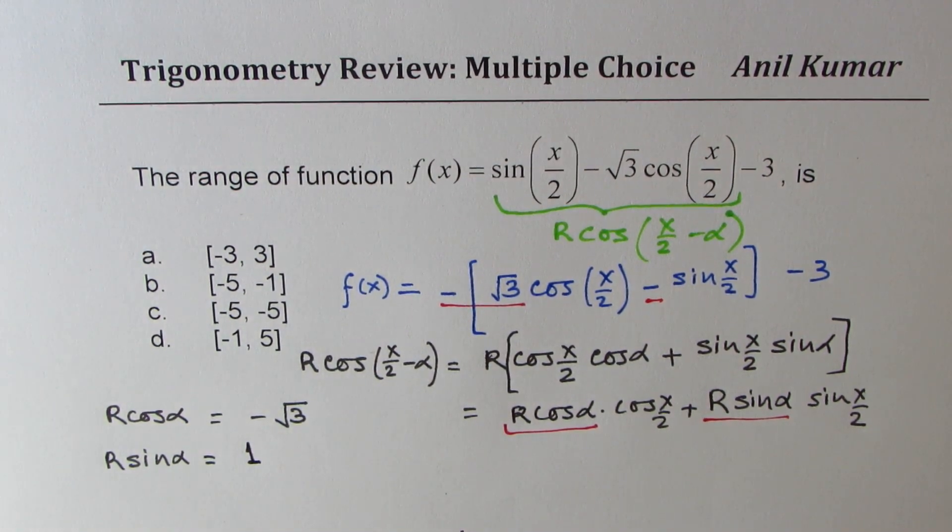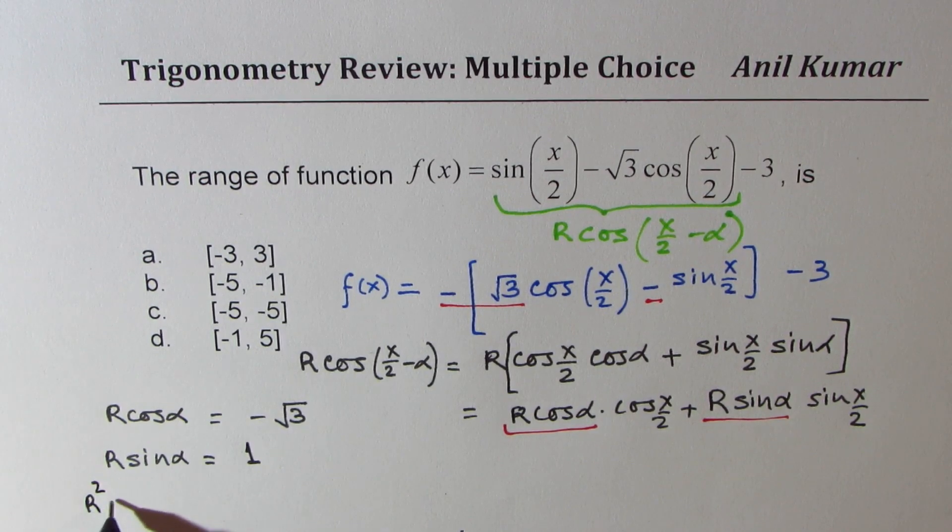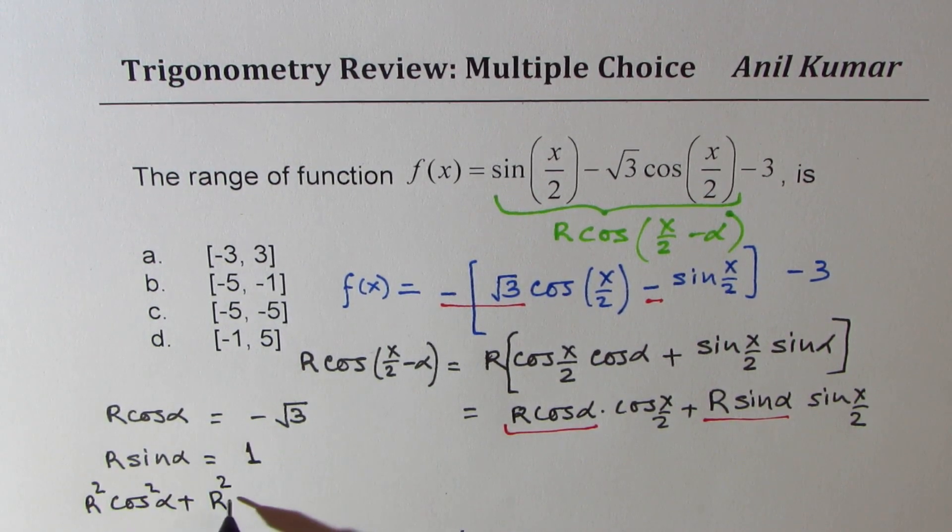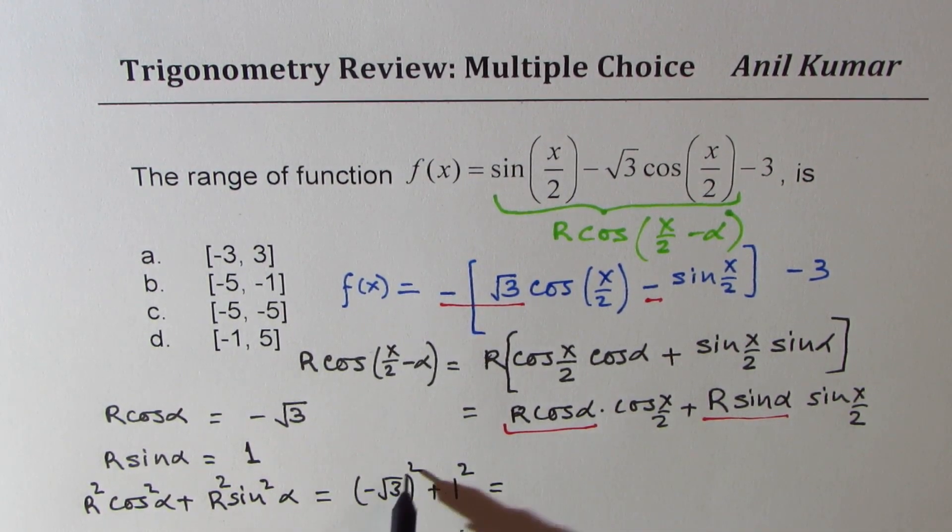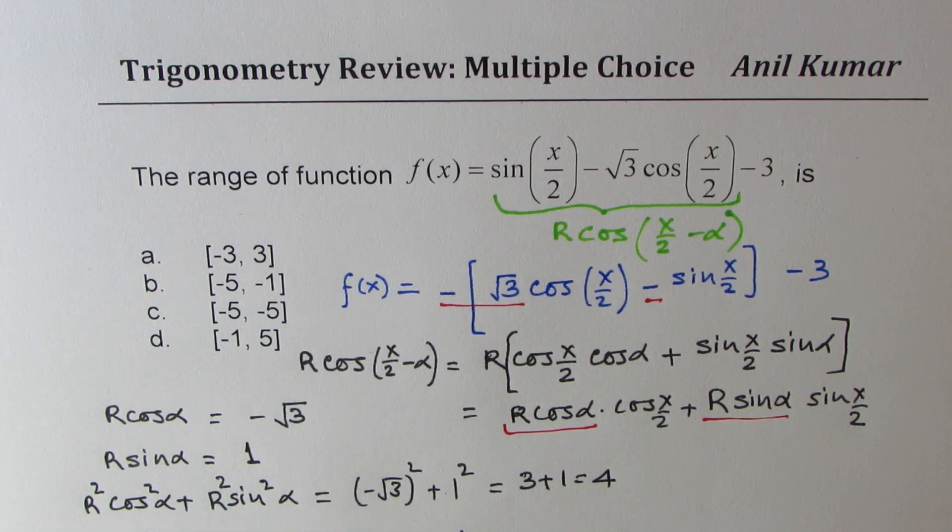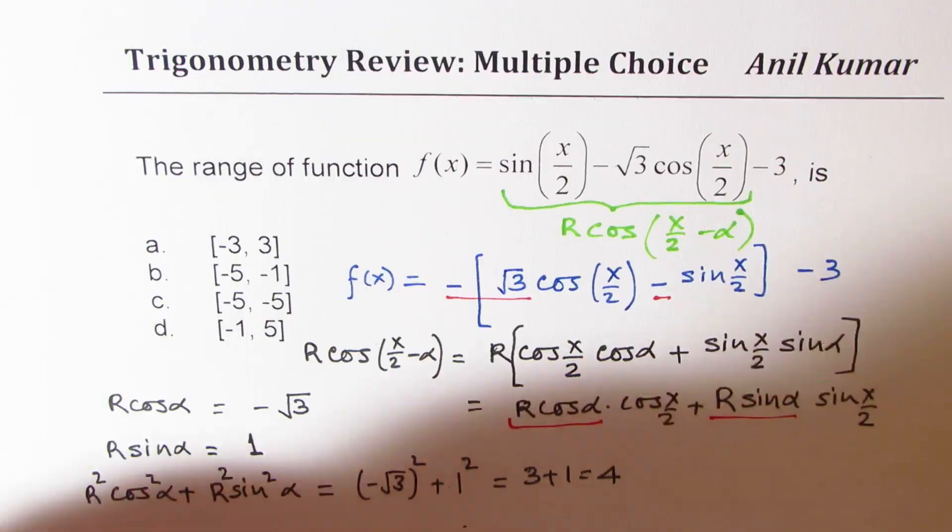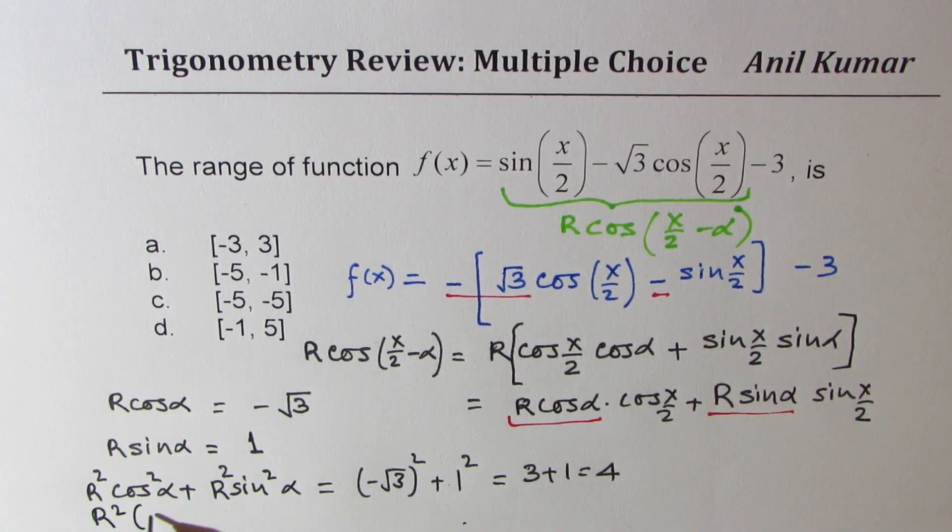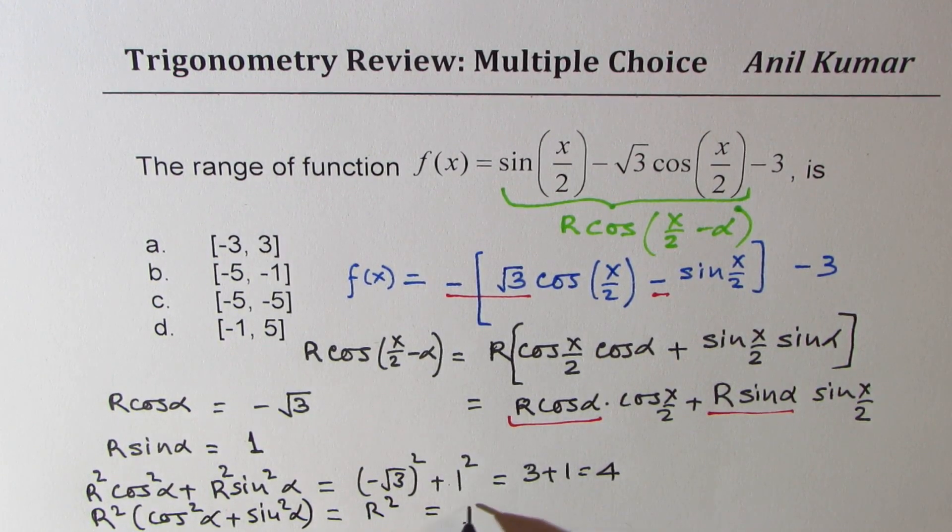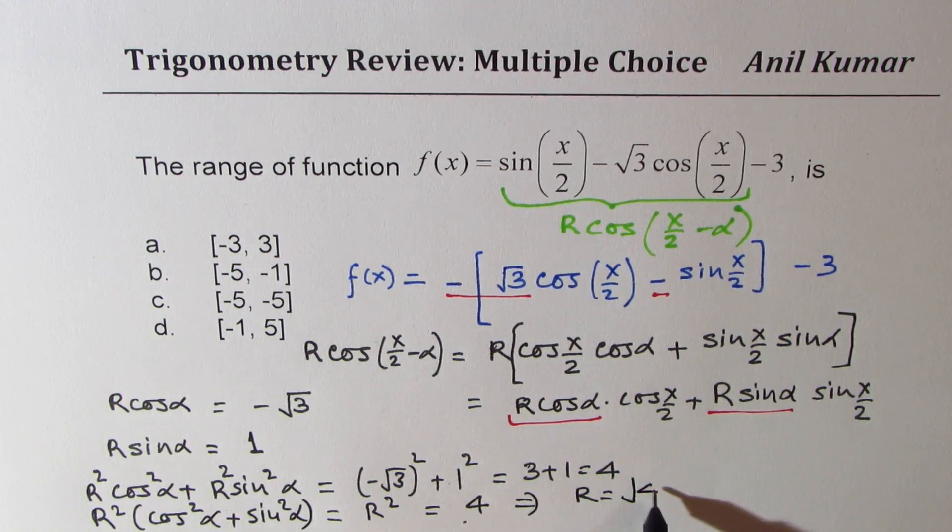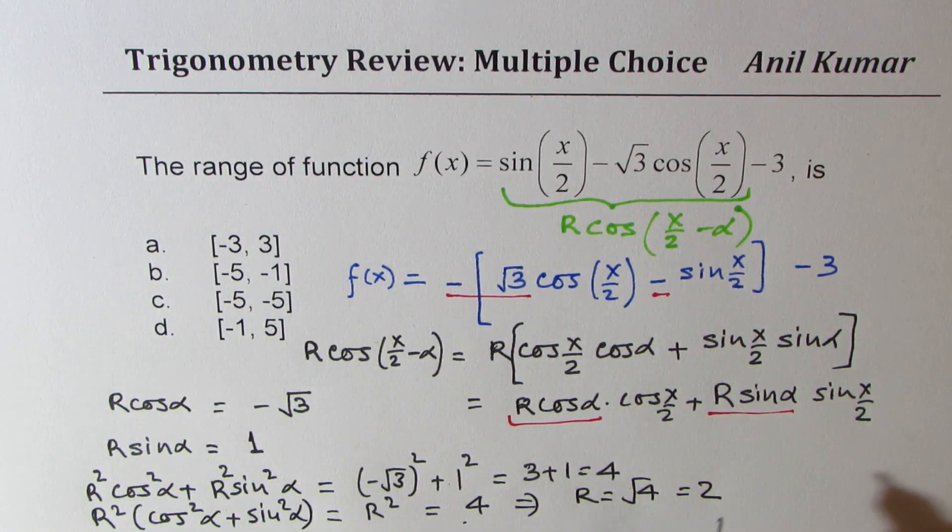To get the value of R, we can square them and add. So we get R squared cos squared alpha plus R squared sine squared alpha equals square of minus square root 3 squared plus 1 squared, which is 3 plus 1, which is 4. This side is cos squared alpha plus sine squared alpha, which is basically R squared. So we know R squared is 4, and that implies that R equals 2.